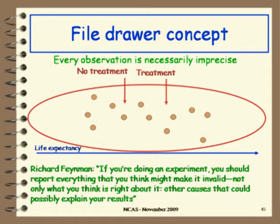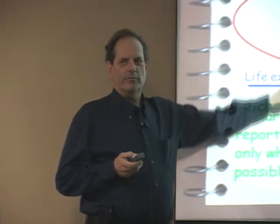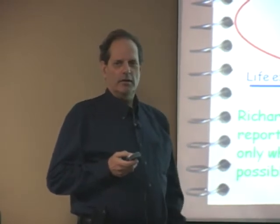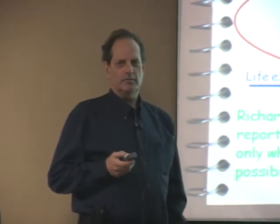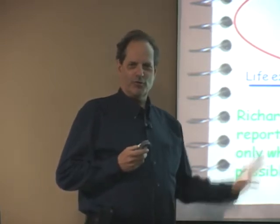Richard Feynman, the physicist, said: if you're doing an experiment, you should report everything that you think might make it invalid — not only what you think is right about it, but other causes that could possibly explain your results. His view of publishing research is you want to publish everything about it, both the good and the bad. But the journals won't take it — they won't take all that negative information. And that's why there are things wrong with the whole process.